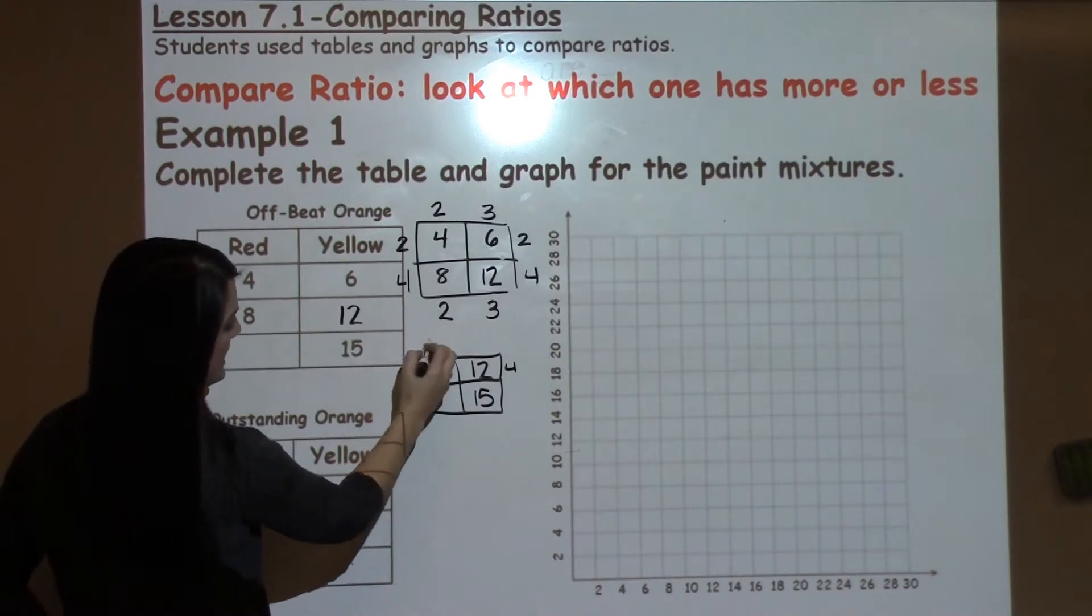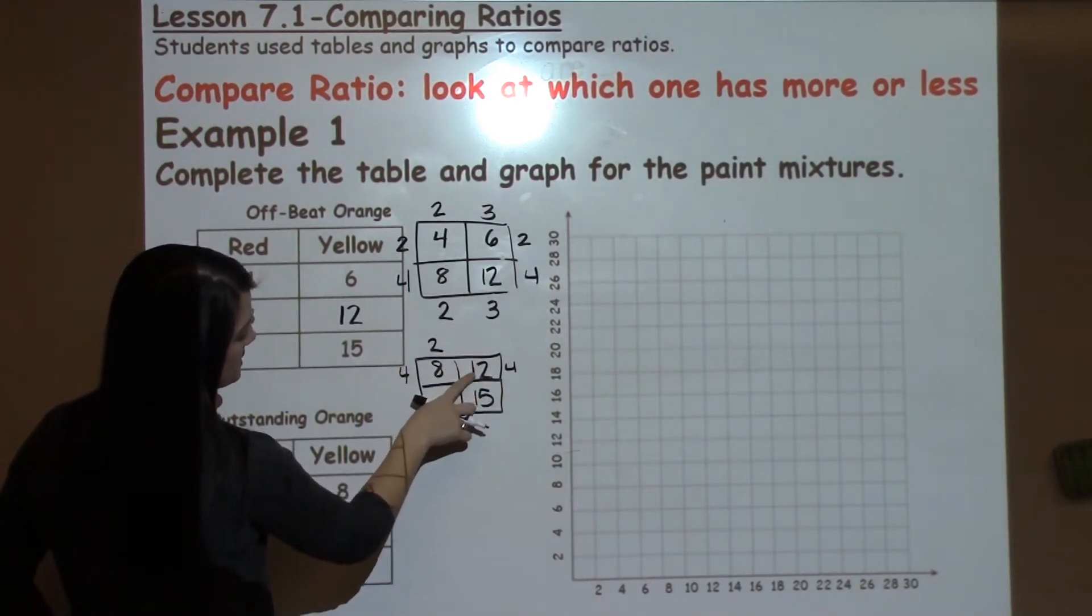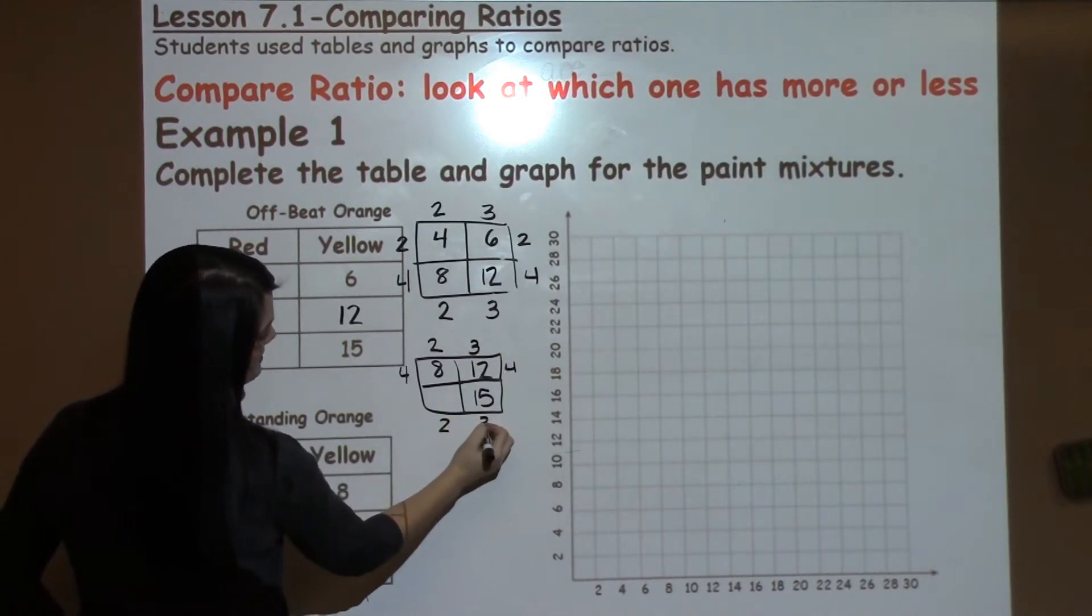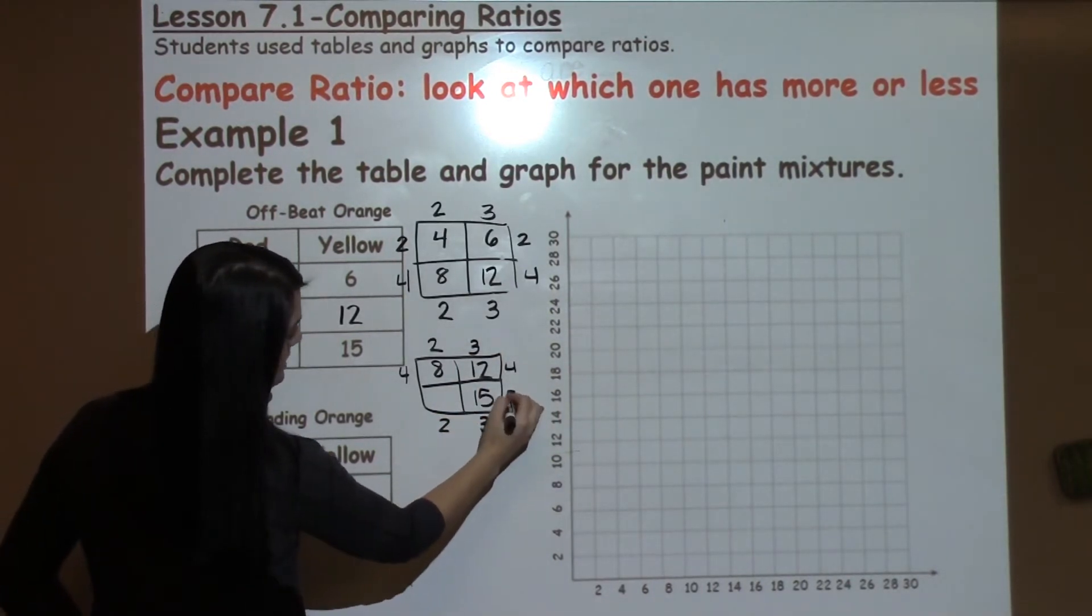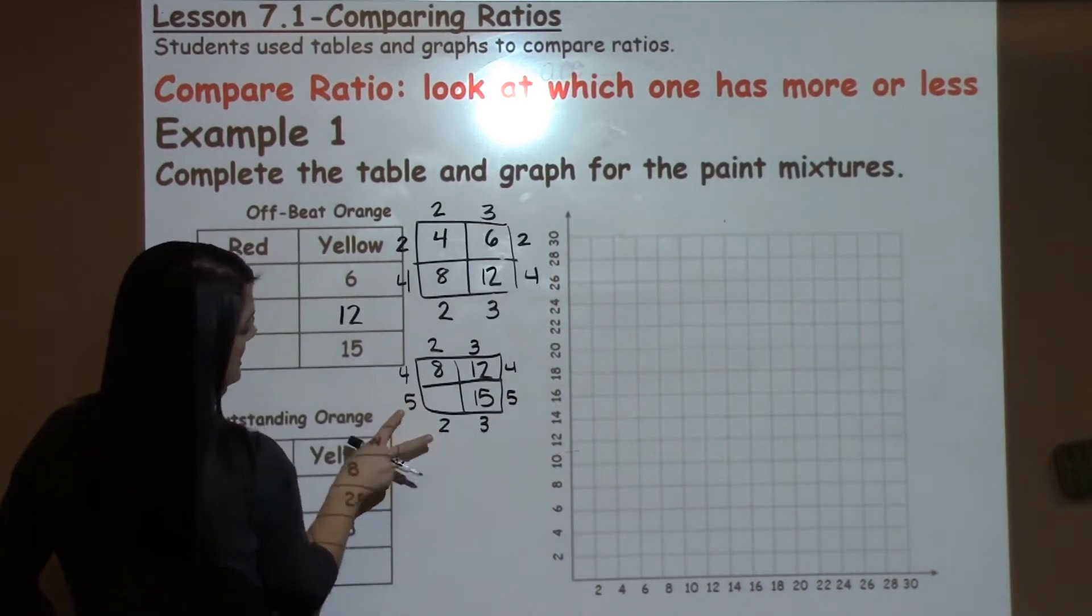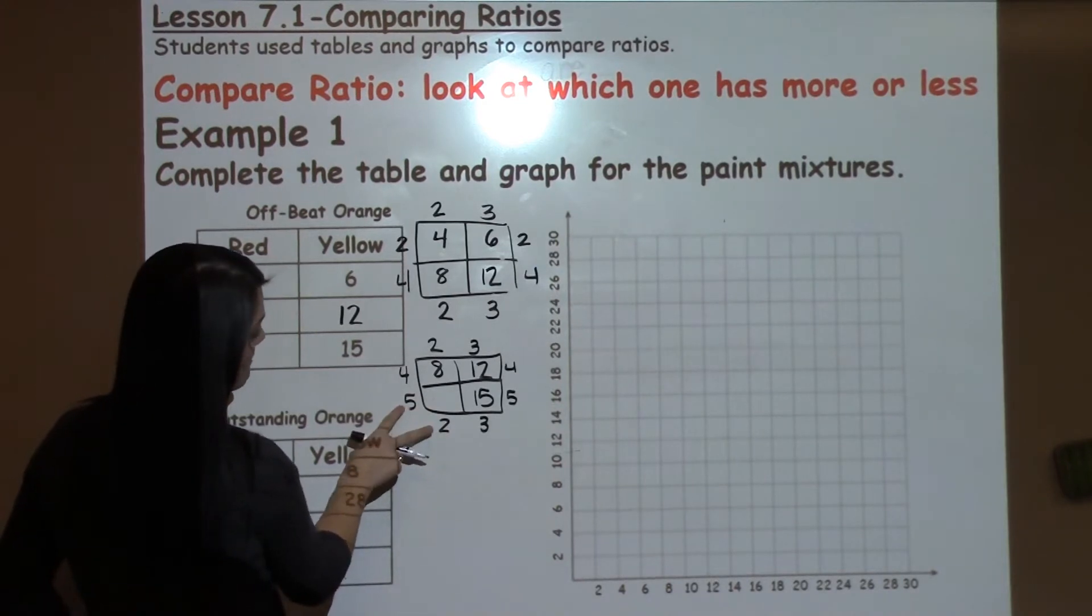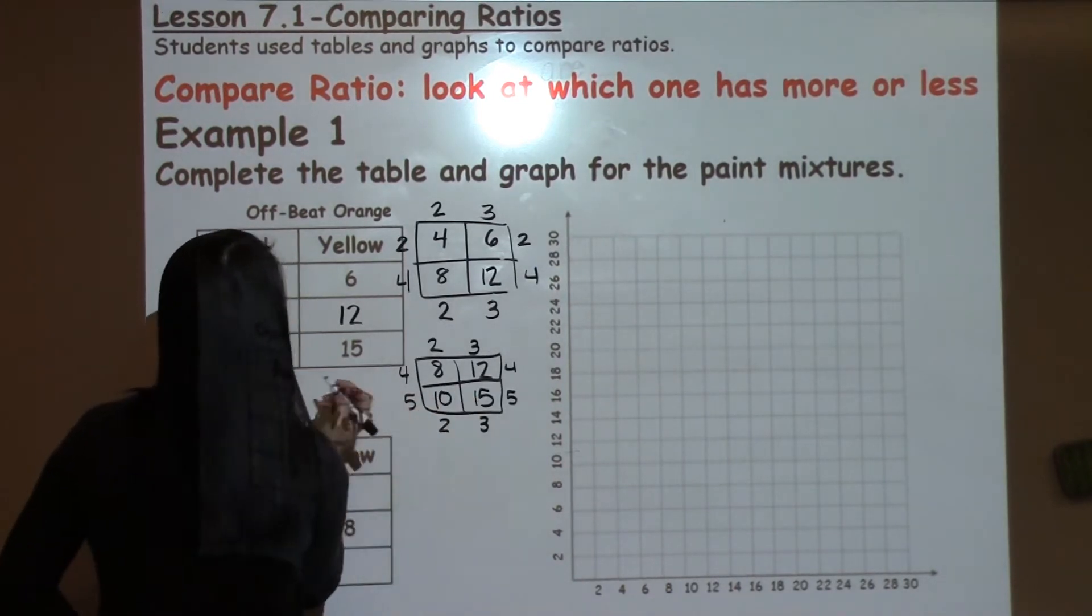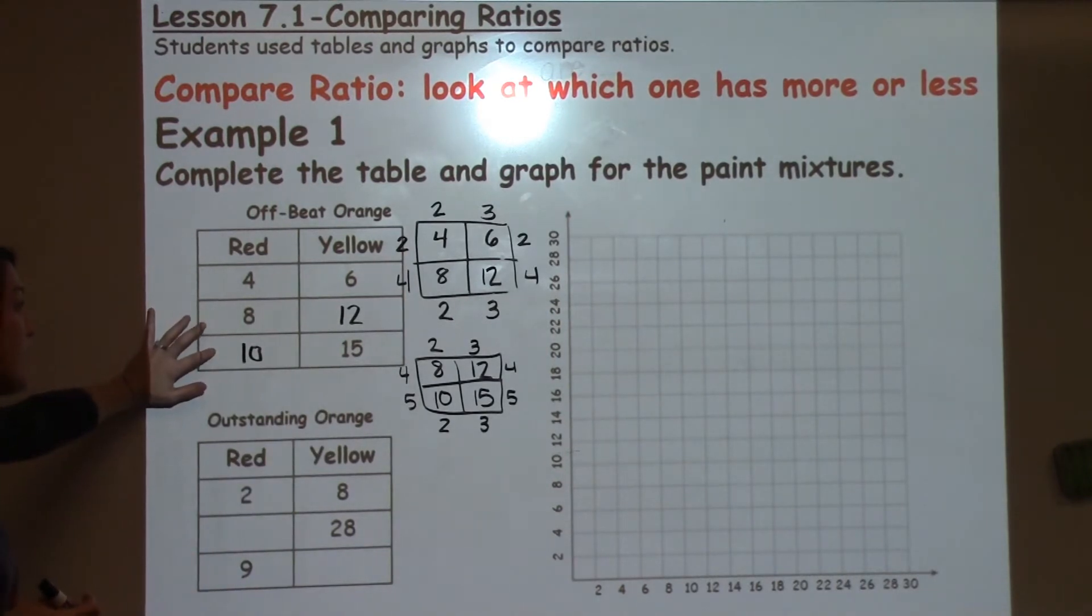4 times what gives me 8? That would be 2, so I put it down below. 4 times what gives me 12? That would be 3, so it comes down below. 3 times what gives me 15? That would be 5, so it shoots across. And then I just need to multiply these two numbers to find the missing number. 5 times 2 is 10, and that gives me my missing number of red paint.